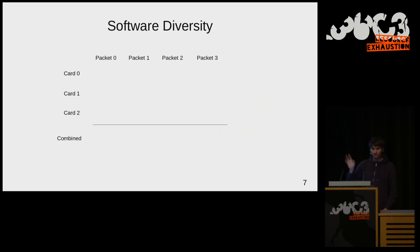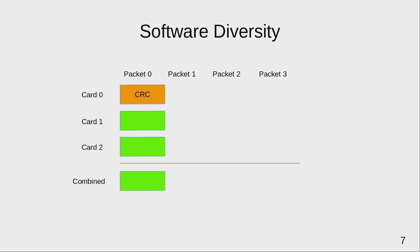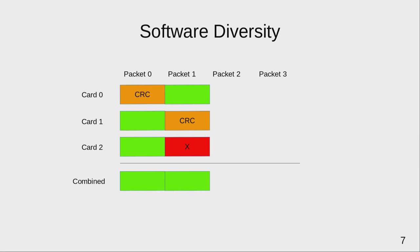Here's how it works with three cards and four packets. Card zero received a packet with a CRC error — at least one bit is flipped, but we don't know severity. The other cards received good packets, so we just pick one of the good ones. Packet two might be good on card zero, have a CRC error on card one, and be completely missing for card two — easy choice, we pick the good one.